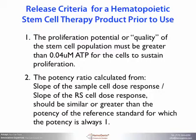The release criteria for a hematopoietic stem cell therapy product prior to use are: 1. The proliferation potential or quality of the stem cell population must be greater than 0.04 micromolar ATP for the cells to sustain proliferation. And 2. The potency ratio calculated from the slope of the sample cell dose response divided by the slope of the reference standard cell dose response should be similar to or greater than the potency of the reference standard, for which the potency is always 1.